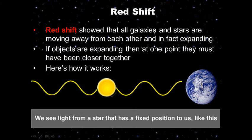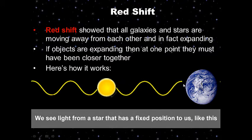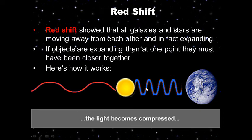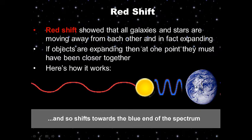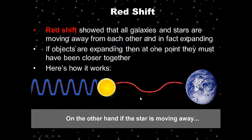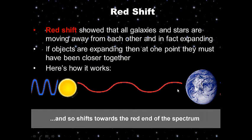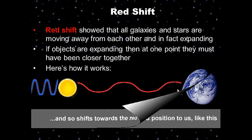We see light from a star at a fixed position — if stars weren't moving, they would send us yellow light. If stars were moving closer to us — the Doppler effect — they would send us compressed blue light. But that's not what we see. Things are moving away from us, so we see redshift: red light. When stars and galaxies move away from us, they send us red light.